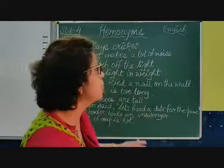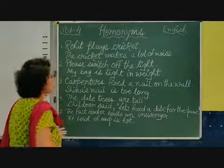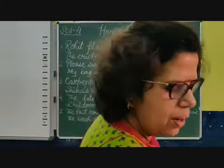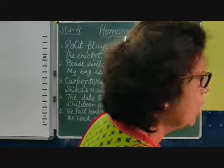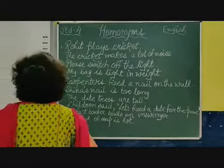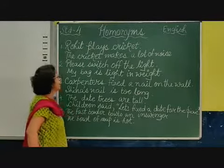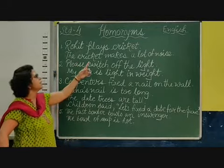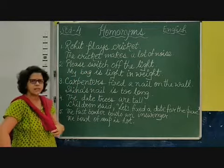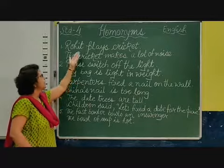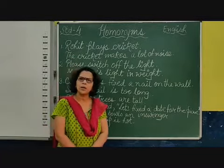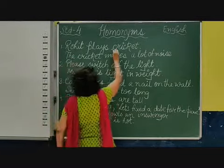So let us do some homonyms which are given on the board. As you do it, you will be clear about what I am saying. So the first sentence says: 'Rohit plays cricket and the cricket makes a lot of noise.' Cricket is also an insect, a type of insect. In these two sentences, which word is common? Yes, that is cricket.